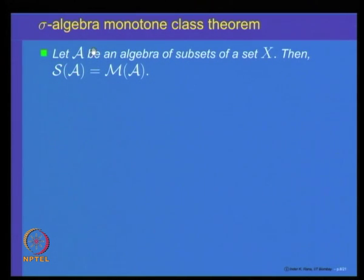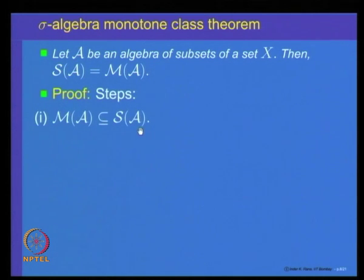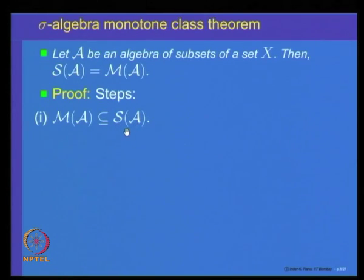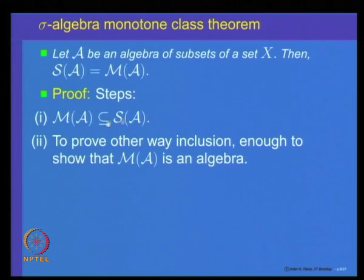We want to analyze when S(C) = M(C). The answer is given by the sigma algebra monotone class theorem: if A is an algebra of subsets of X, then the sigma algebra generated by A equals the monotone class generated by A. We already know M(A) ⊆ S(A) for any collection. So we need to prove the other inclusion: S(A) ⊆ M(A) when A is an algebra.